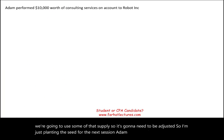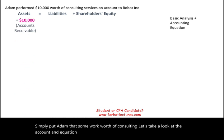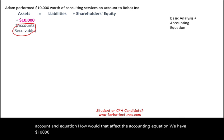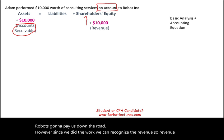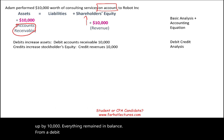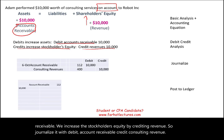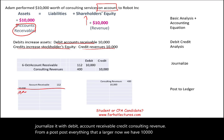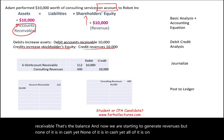Transaction 5: Adam performed $10,000 of consulting services on account to Robot Inc. We have $10,000 more in accounts receivable; since the work was done, we can recognize the revenue. Assets go up $10,000, stockholders' equity goes up $10,000 — the equation remains in balance. We debit accounts receivable $10,000 and credit consulting revenue $10,000. After posting, accounts receivable balance is $10,000. We're generating revenue, but none of it is in cash yet.